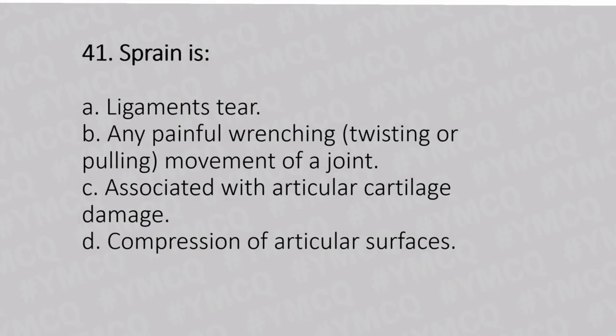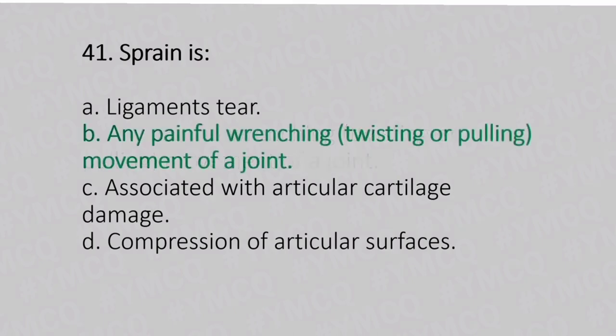Question number 41. A sprain is. Option A: any painful bending or twisting or pulling movement of the joint. Option B: any painful bending movement of the joint. Option C: associated with articular cartilage damage. Option D: compression of the articular surface. And the answer is Option B, any painful bending movement of the joint.